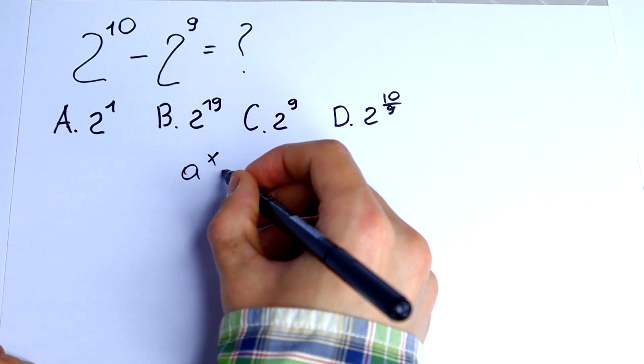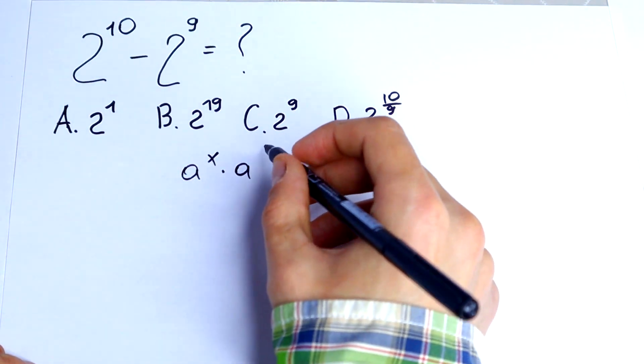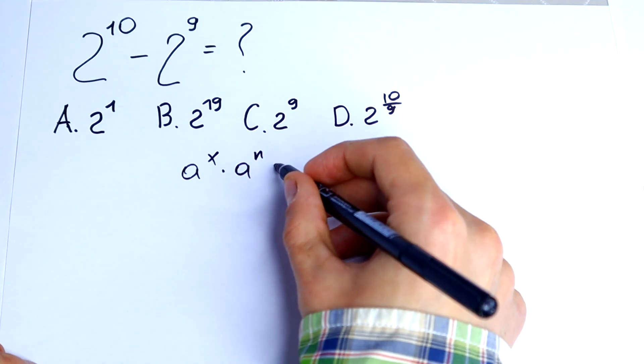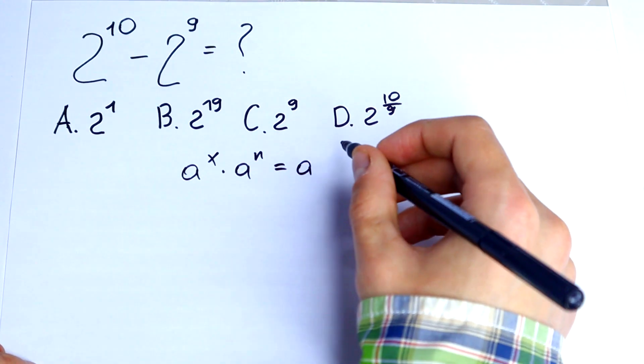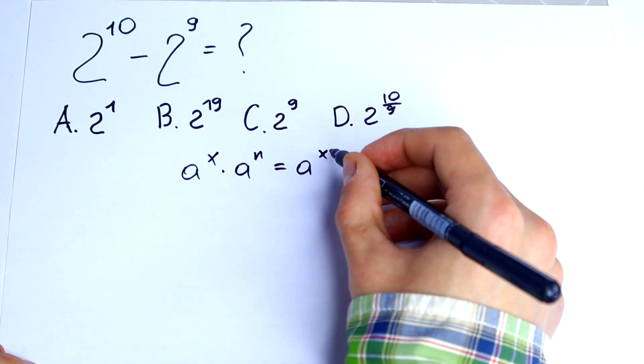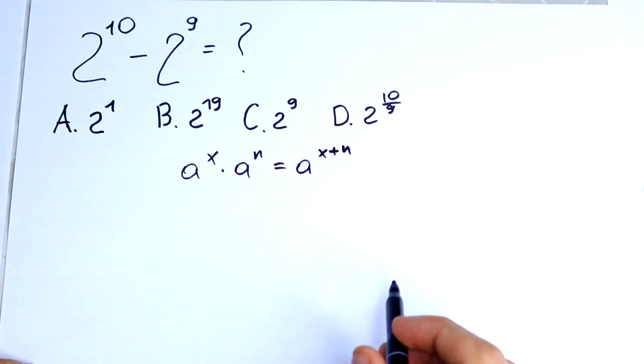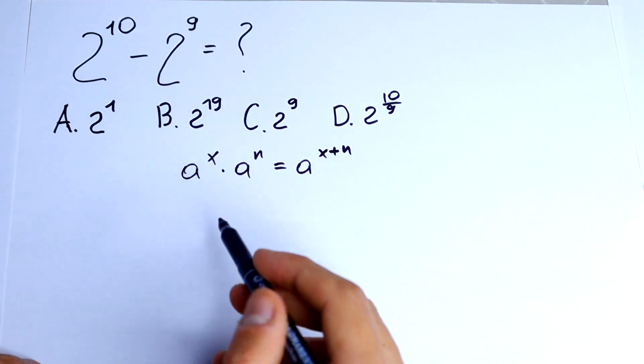So let's write our multiplication rule: a to the power x times a to the power n would be equal to a to the power x plus n. So let's use this rule right here.